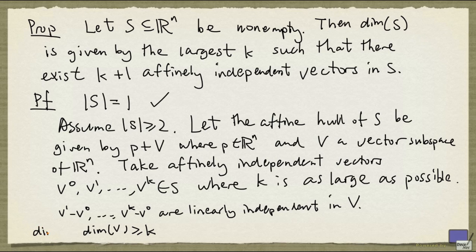But the dimension of S is defined to be the same as the dimension of V. So the dimension of S is at least k. Now, because k was chosen to be as large as possible, every other vector in S can be written as an affine combination of v⁰ up to v^k. And that means S is contained in an affine subspace of dimension at most k. That implies that the dimension of S is at most k. And so we have inequalities in both directions, therefore the dimension of S is equal to k.